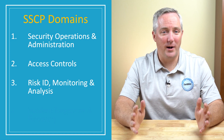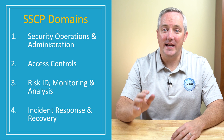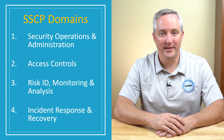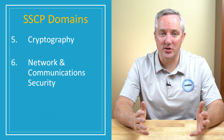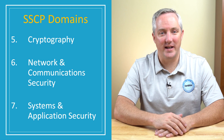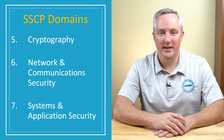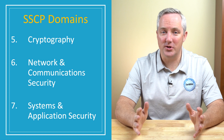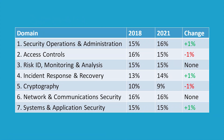The other five domains remain exactly the same: Risk Identification, Monitoring and Analysis, Incident Response and Recovery, Cryptography, Network and Communication Security, and Systems and Application Security. The weightings of the domains have also changed, but only slightly. This table gives you a quick look at the details, but these changes are pretty minor — just a shift of a few percentage points here or there. When you're dealing with an exam that's 125 questions long, we're talking about just a shift of a few questions between domains, nothing that's going to change your study plans.